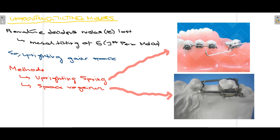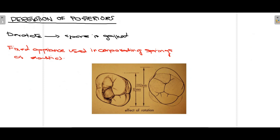The fifth method is uprighting tilted molars. When a deciduous molar — for example tooth E — is lost, the first permanent molar (tooth 6) tends to tilt mesially, causing loss of space. To gain this space back, two appliances are used: an uprighting spring, to bring the molar back to the proper direction, and a space maintainer, to prevent further mesial tilting of the molar.